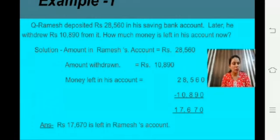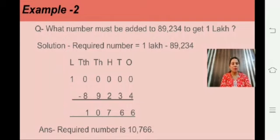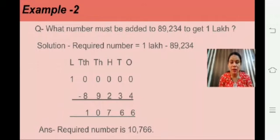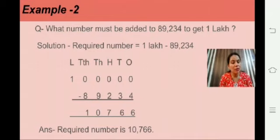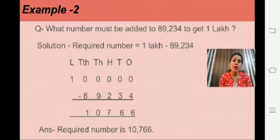I hope you understood that solution and how to solve this type of question. Now see the next example: What number must be added to 89,234 to get 1 lakh? Here is a simple example — if you have Rs. 5, how much money should be added to make it Rs. 8? The answer is Rs. 3. How? By subtracting 5 from 8. In the same way, what must be added to 89,234 to get 1 lakh? You do subtraction.